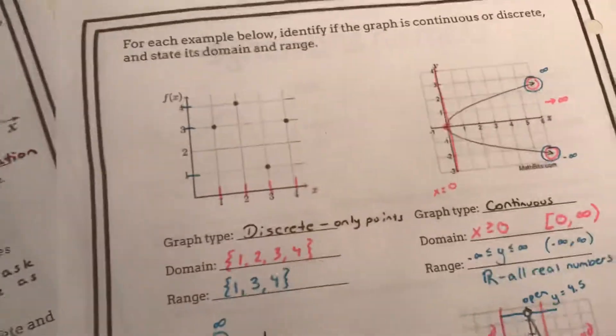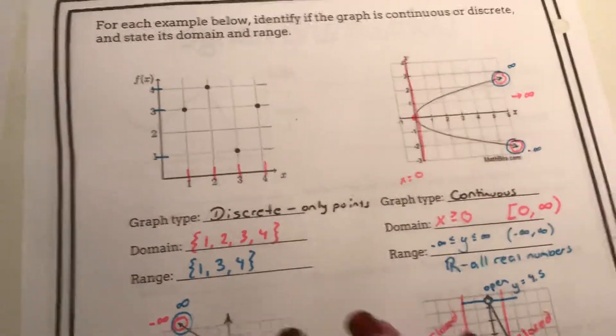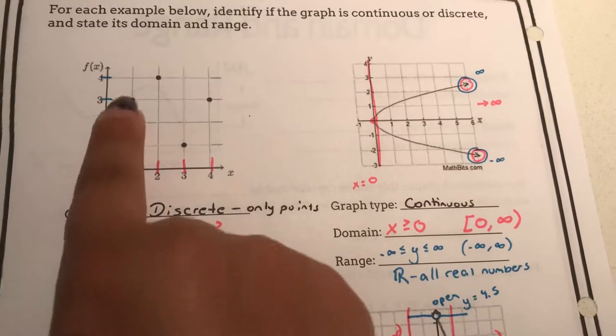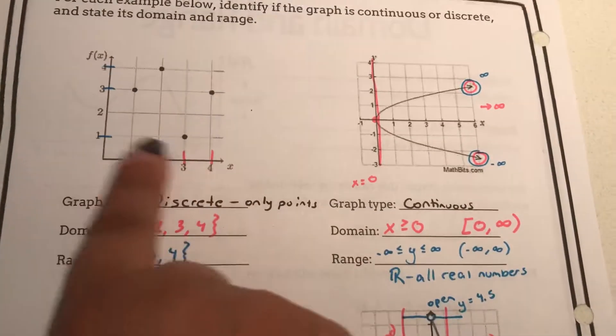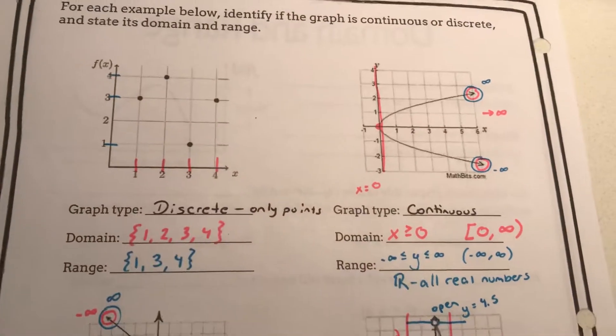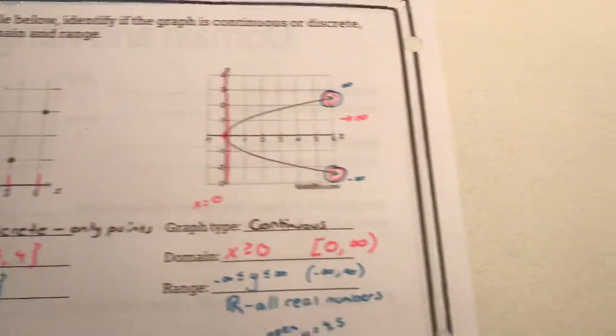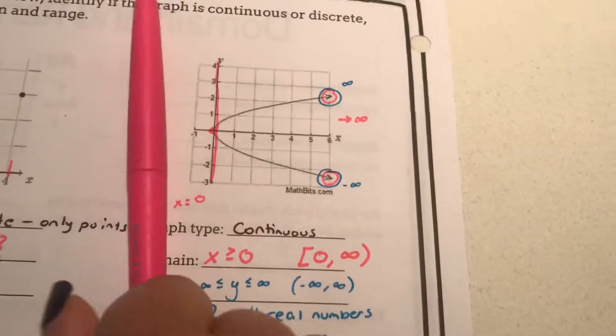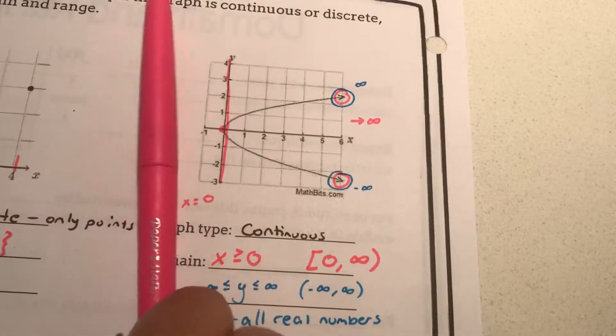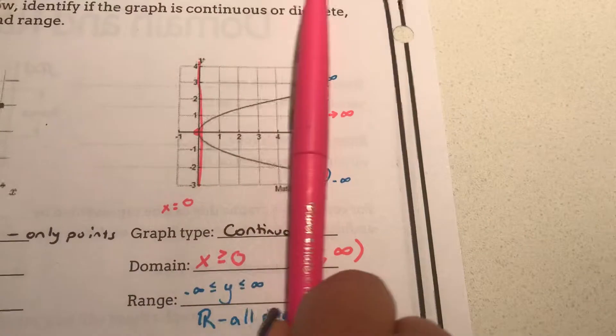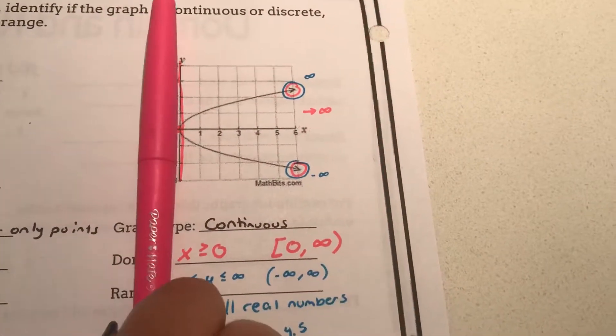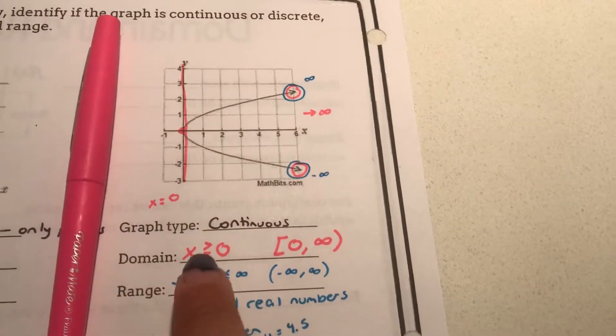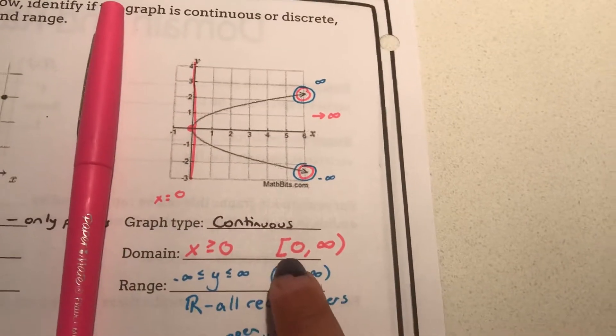So here are a few examples. These notes are available on Google Classroom. Discrete I just listed the individual values where points can be located. And here for domain. I took my pencil and dragged it along the x values along the x axis. And it started at zero.